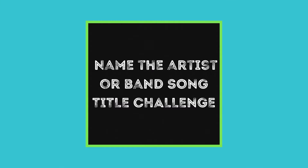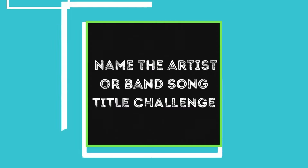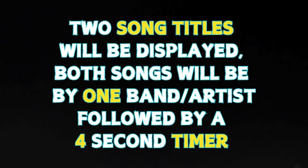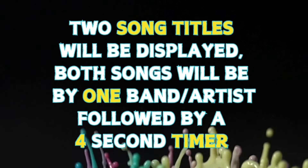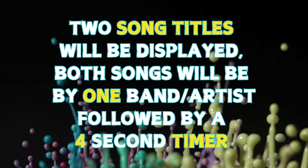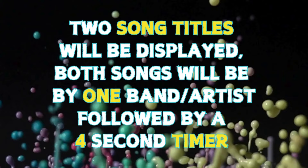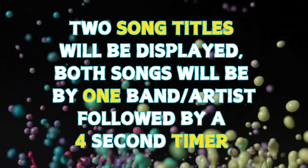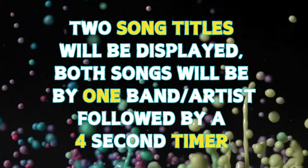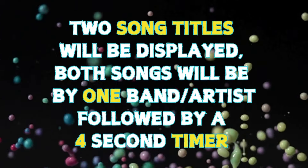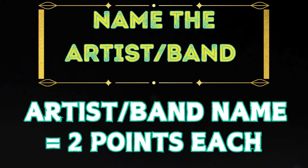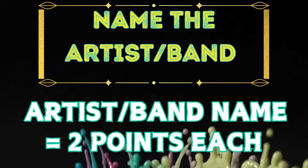Total possible round points is 18. Round 3: Name the Artist or Band — Song Title Challenge. In this round, 2 song titles will display, both by the same artist or band. You will have a 4 second timer after each of the 4 questions to make your guess. If you can name the artist or band, award yourself 2 points for each you get correct. Total possible points this round is 8.